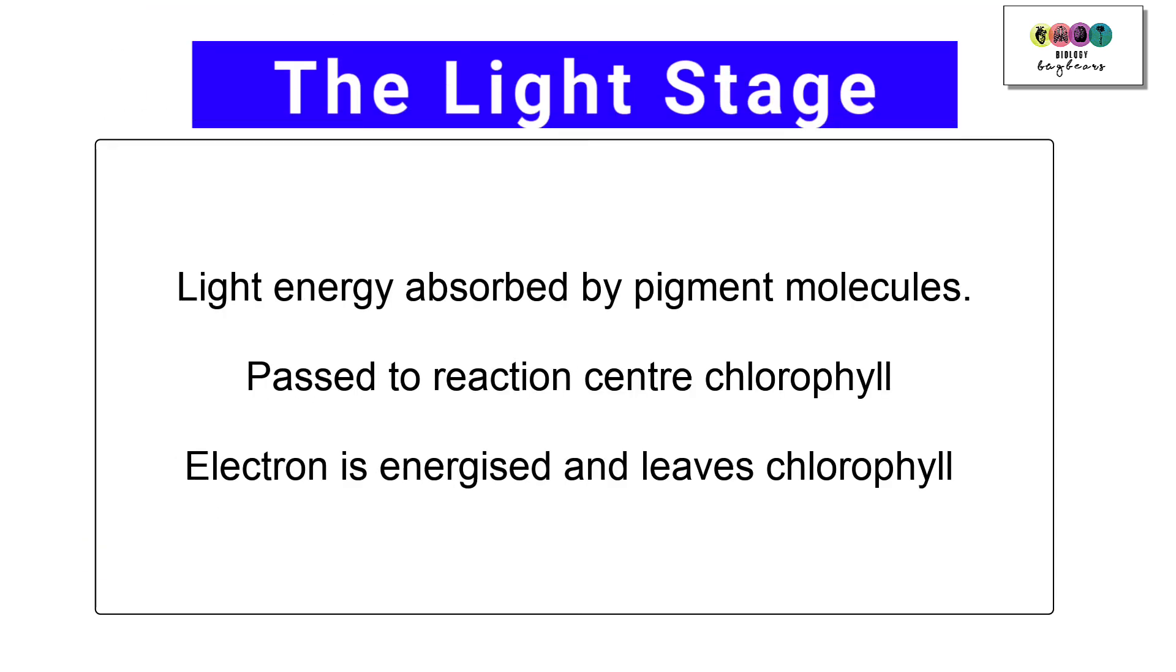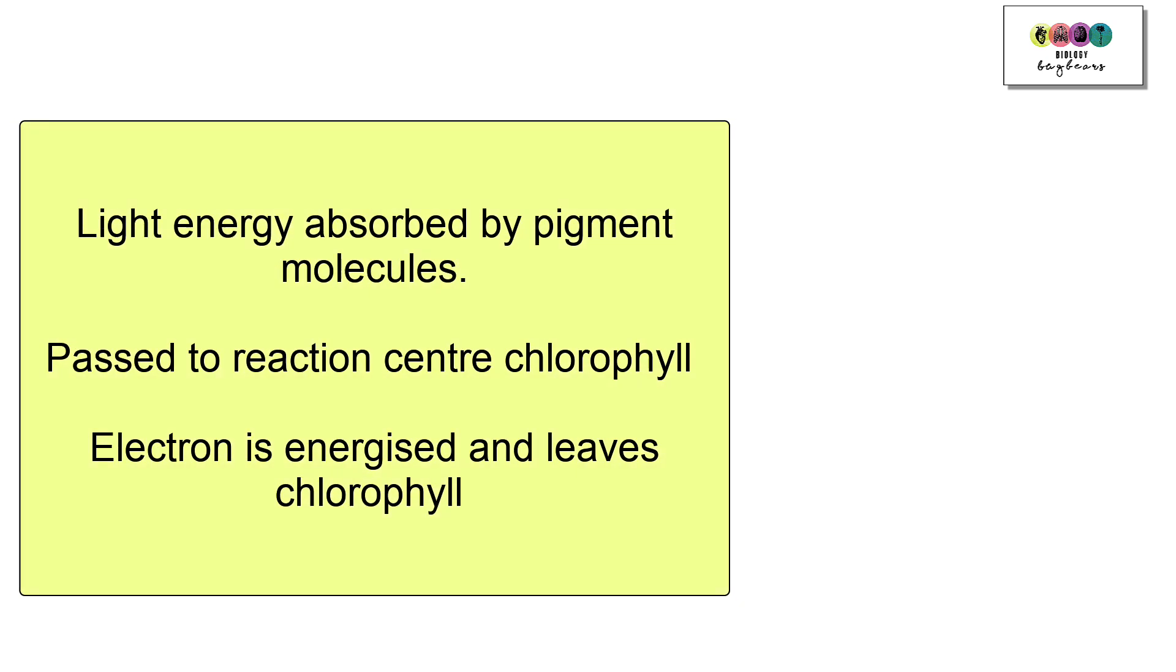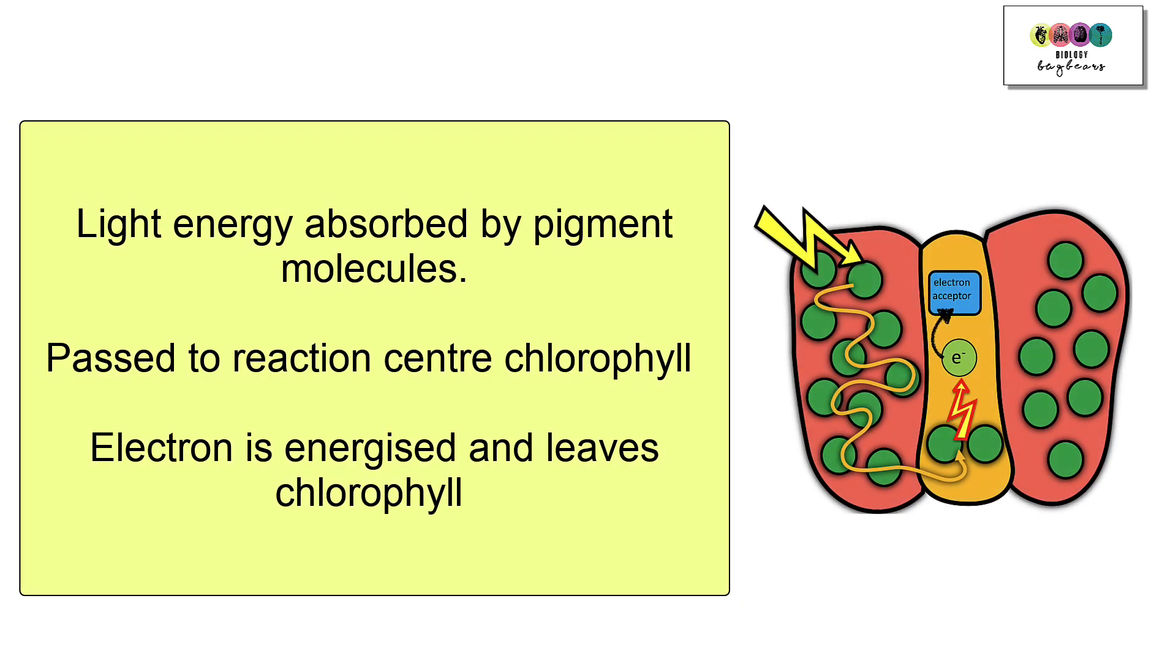When we think of the light stage, we know that light energy is absorbed by pigment molecules and eventually this light energy gets passed to a specially positioned reaction-centered chlorophyll. This results in an electron being energized and it leaves chlorophyll.